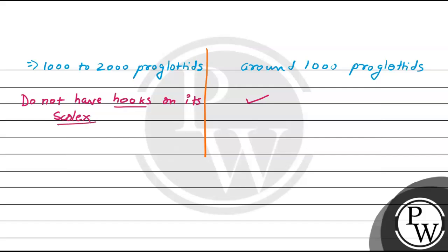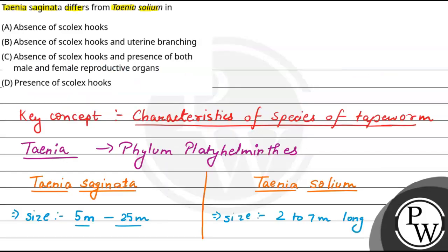This is the main difference. That is the reason why our correct answer is option A, which is absence of scolex hooks in Taenia saginata. Hope you have understood this well. Thank you.